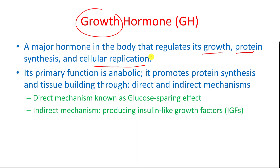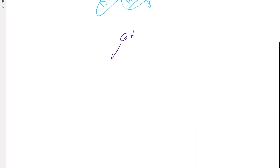Growth hormone promotes tissue building, and those mechanisms can happen in one of two ways: either a direct mechanism or an indirect mechanism. The direct mechanism is something known as the glucose sparing effect.